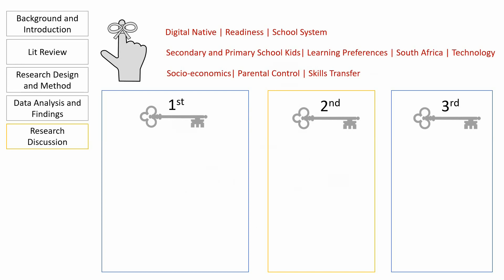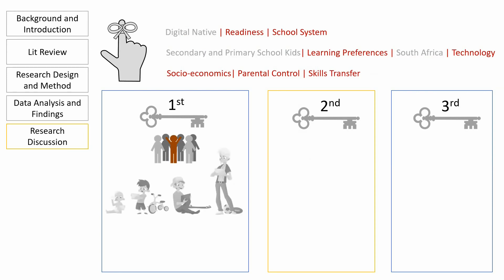Our first key finding is that literature says that all kids between a certain age are considered digital natives because of their proficiency in the use of technology. But the data in our study contradicts this notion and concludes that being a certain age does not guarantee digital native status. However, age is a contributing factor when it comes to preferences for technology because tech preferences change as the kids get older. Our data also shows a trend that their use of technology rarely exceeds the realm of programs meant for chatting and entertainment — so they know how to use things like Instagram and Snapchat but they don't know the difference between a column and a row in Excel. Thus chances are that these skills may not be as transferable from home life to school life.